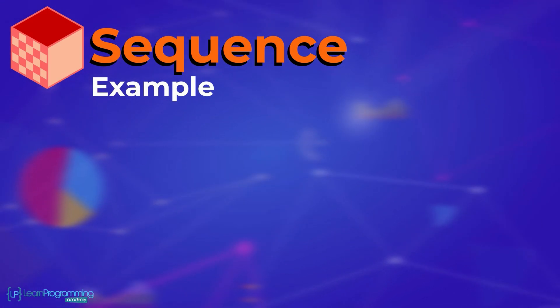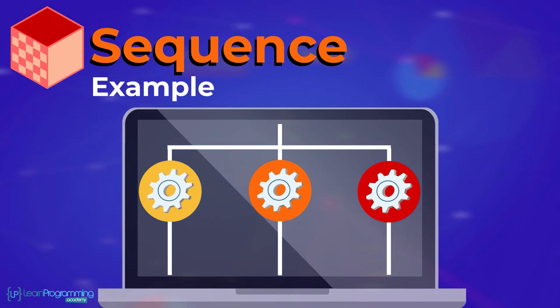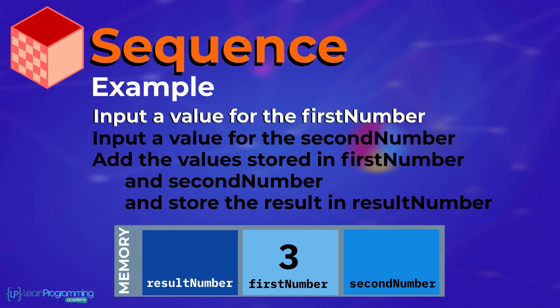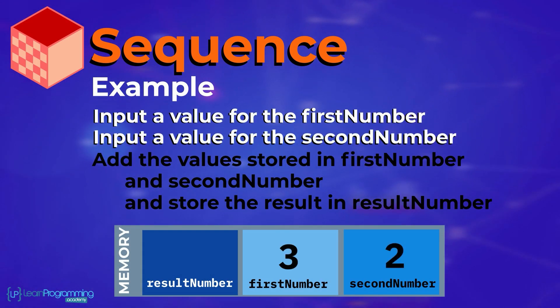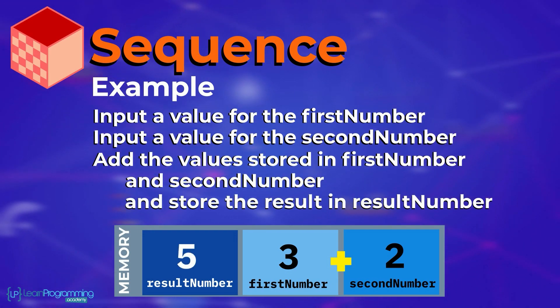Now of course some of these sequential things can be done in tandem or parallel, and so they can be done inside the computer in parallel processing. Now a programming example of this using English rather than a specific programming language might look like this. Input a value for the first number, input a value for the second number, add the value stored in first number and second number and store the result in result number.